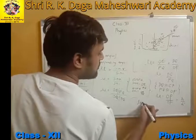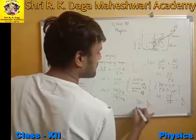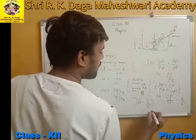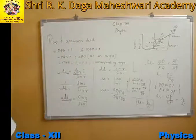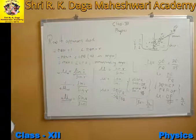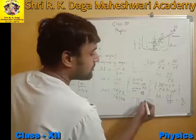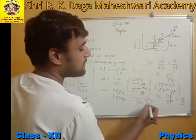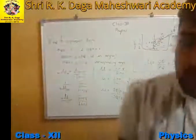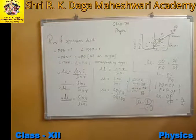We can see that OP equals h (real depth) and OP' equals h' (apparent depth). Therefore, nu equals h upon h'. This means the refractive index of the first medium with respect to the second medium is the ratio of real depth to apparent depth.